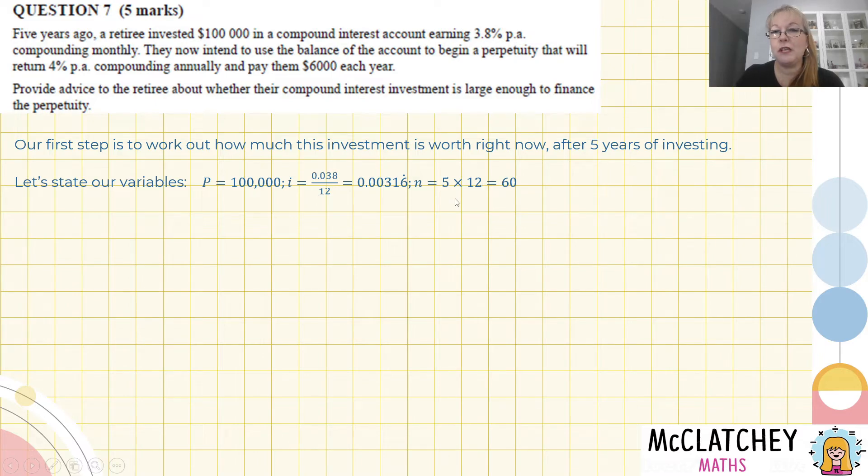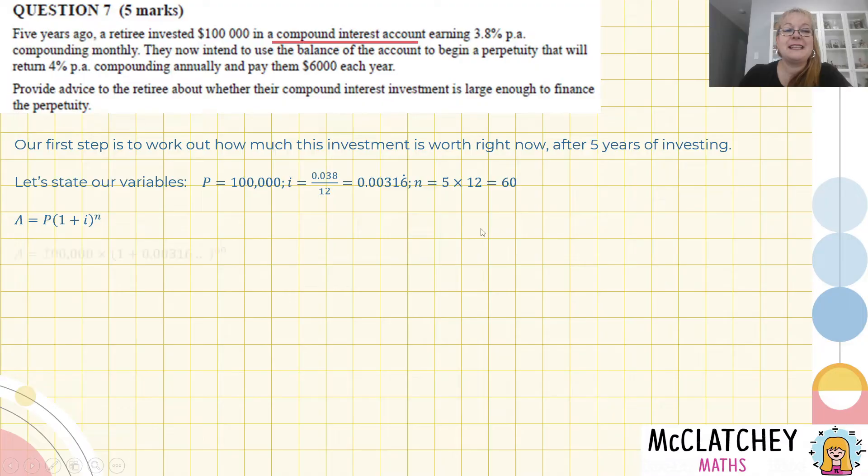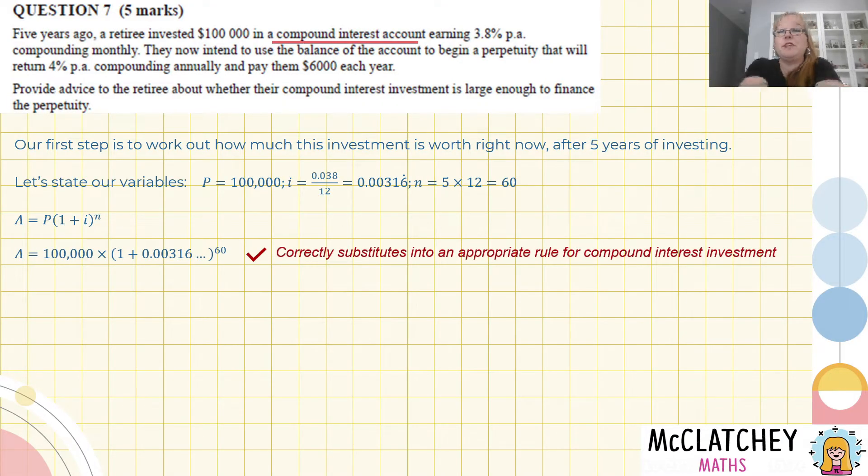And now we need to choose an appropriate formula. So let's have a quick look at our formula sheet. We've got a lot of choices on here for finance. We're told it's a compound interest account. There's nothing special about it. It's not an annuity of any kind. It's just compound interest, which means it's this simple formula here. So let's put our variables into that formula. Let's substitute in and we get our first mark for the question for correctly substituting into the right rule. There's two parts to this mark. You had to pick the right rule and you had to put the right variables into it.